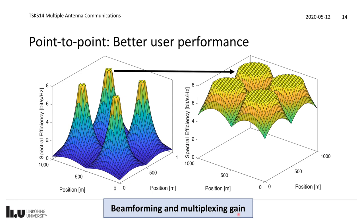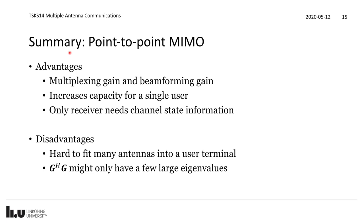There are two main benefits here. The first is the beamforming gain, illustrated by going from the traditional case to a case with a large beamforming gain where everyone gets better performance. Then we have the multiplexing gain as well, where if you have multiple antennas at both the transmitter and the receiver you can send multiple data streams at the same time — not only 8 bits per second per hertz, but a multiple of that proportional to the number of antennas at both ends. In summary for point-to-point MIMO, the advantages are the multiplexing gain and the beamforming gain, jointly helping to increase the capacity for a single user.